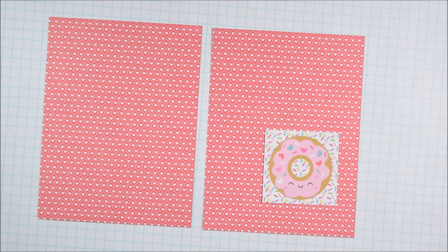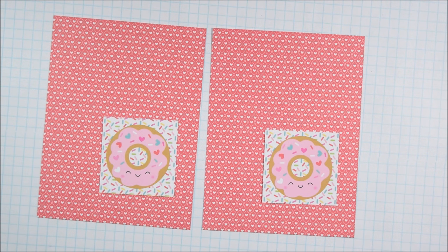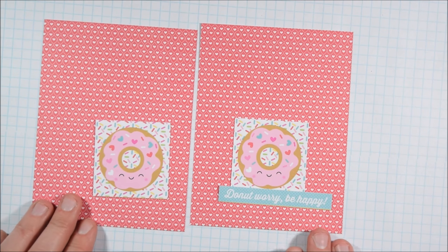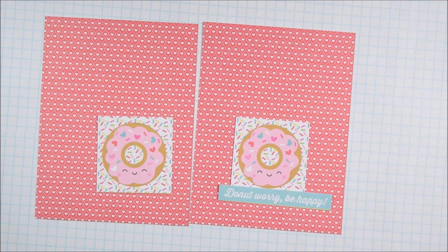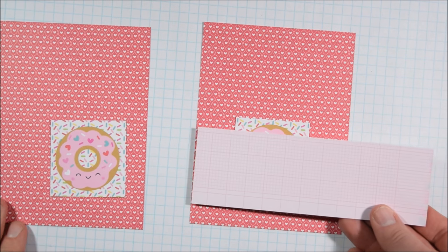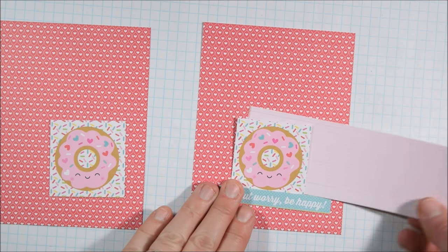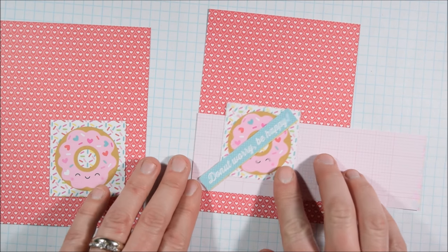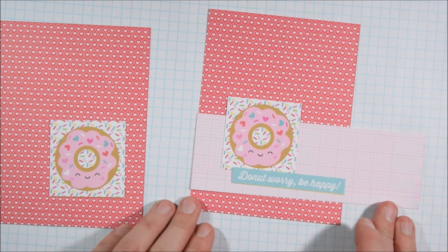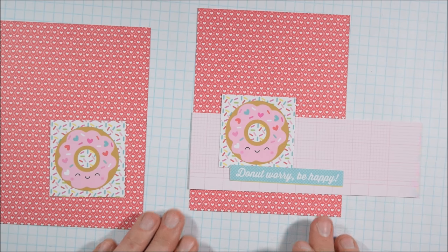So there was this adorable little donut. And some of these images, these cutaways, are really small. And they don't take up enough of the card. But I really like that donut worry, be happy sentiment as well. So I wanted to figure out how I could layer it up to make it a little bit more of a substantial piece so that it didn't look like it was lost and floating in the middle of the card.